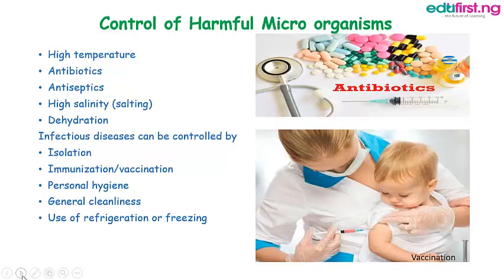Bacteria need water to survive. Infectious diseases can also be controlled by isolation — isolation of an infected person helps to control the spread of the microorganism. By immunization or vaccination, members of the public are given injections which serve as immunity against deadly disease. Personal hygiene and general cleanliness, keeping our homes and environment clean, and use of refrigeration or freezing also help, as the activities of microorganisms are reduced to the barest minimum at low temperature.